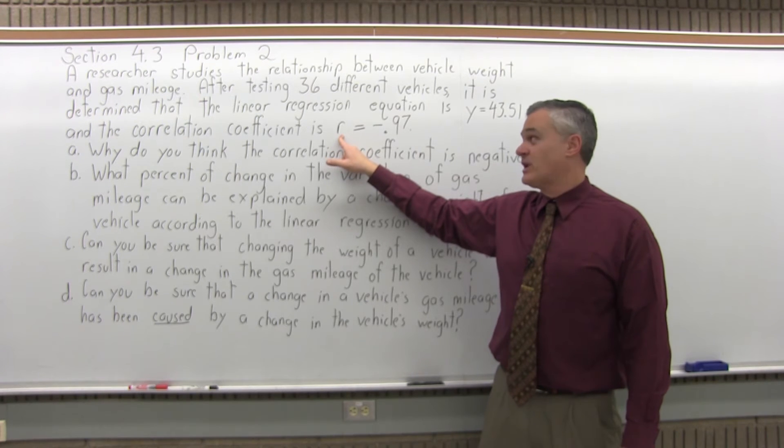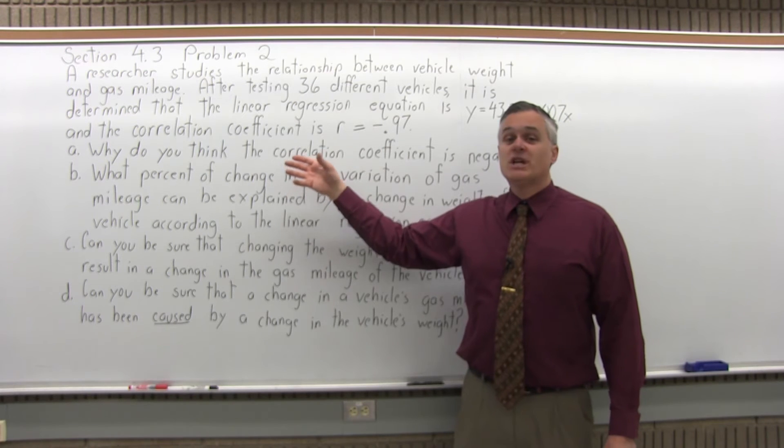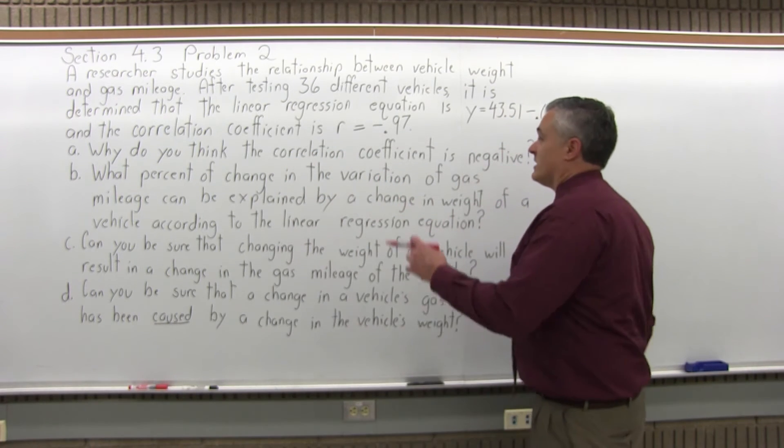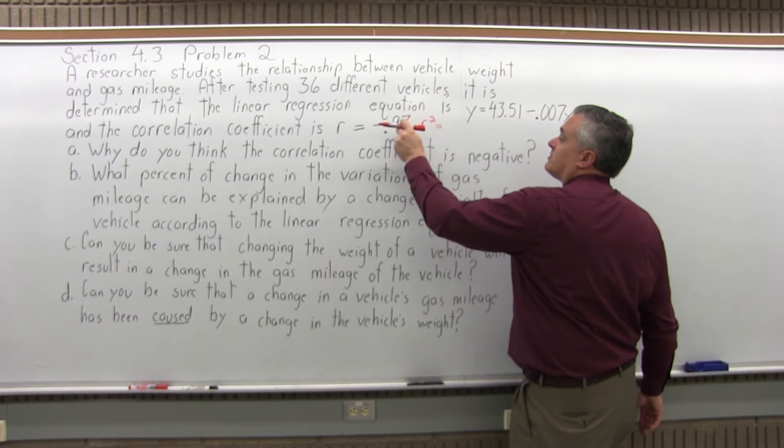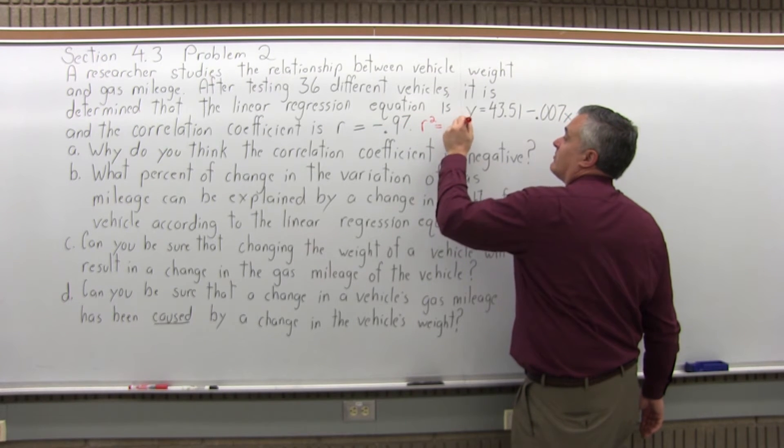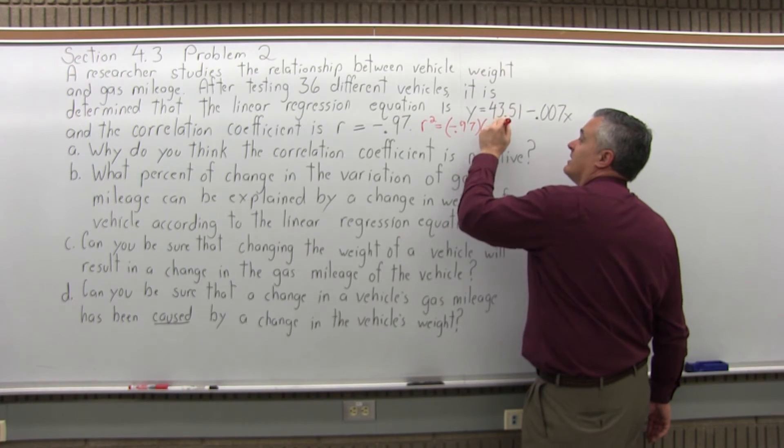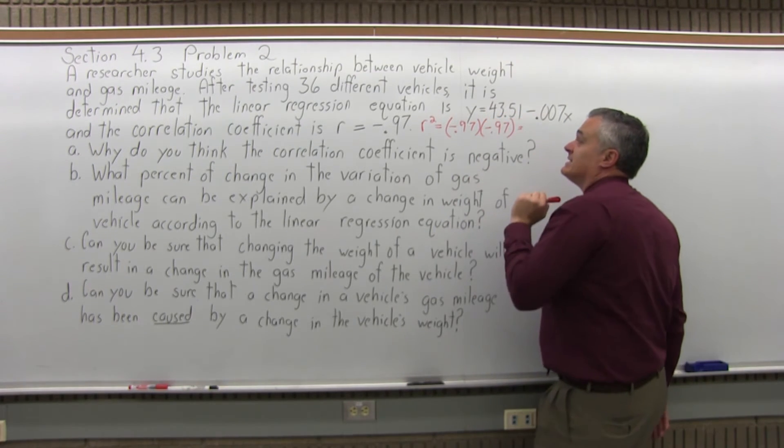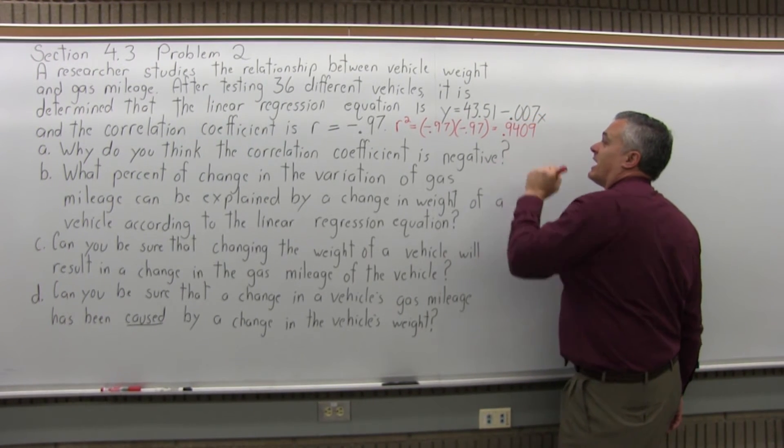They've given r in the question as negative 0.97. So that percent of change of one variable in terms of a change in the other is r squared. So for this particular problem, it would be negative 0.97 squared, or negative 0.97 times negative 0.97. And if you multiply that out, it comes out to positive 0.9409.